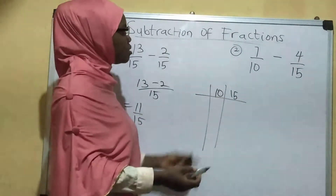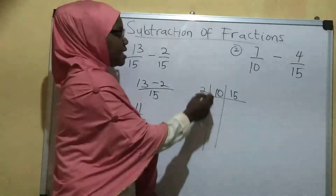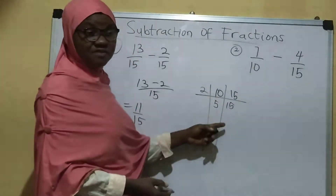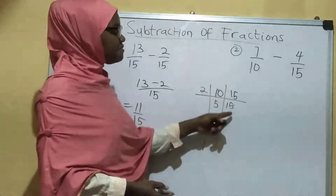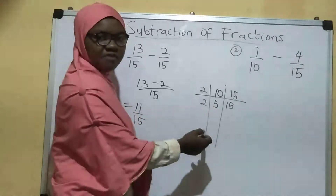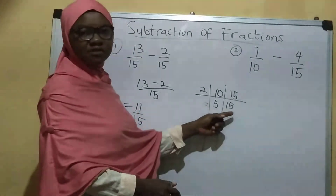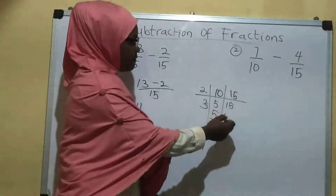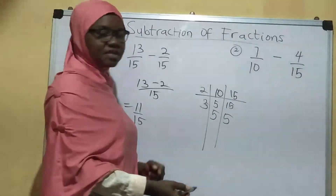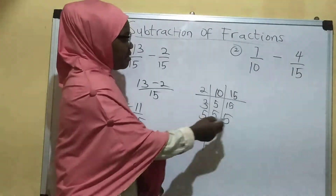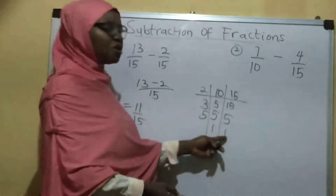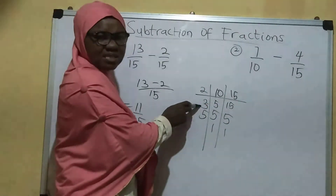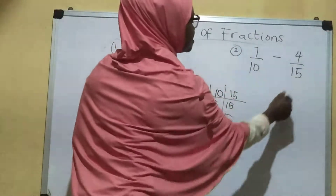I'll start with the smallest number, which is 2. Can 2 divide 10? Yes — 10 divided by 2 is 5. How many 2s can I get in 15? 2 can divide 15 but it will come with a remainder, and I do not want a remainder, so I'll leave my 15 as it is. Now can 2 divide 5? No. So I'll use 3 next. 3 cannot divide 5 evenly, so 5 remains. 3 divides 15 to give 5. Now I have 5 and 5, so I use 5 to divide them — 5 divided by 5 is 1, and 5 divided by 5 is 1. I stop here because I have 1 all through. So the LCM of 10 and 15 is 2 times 3 times 5, which equals 30.